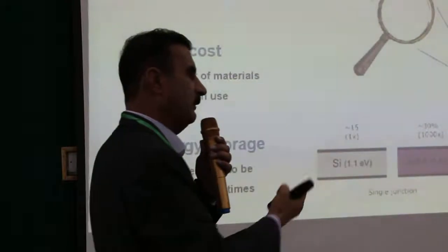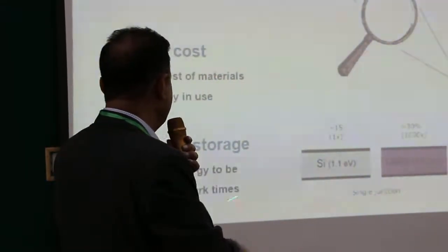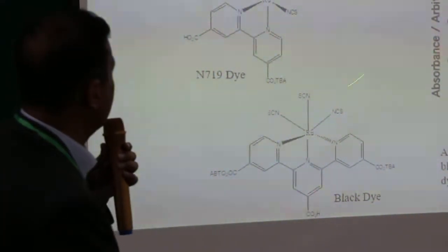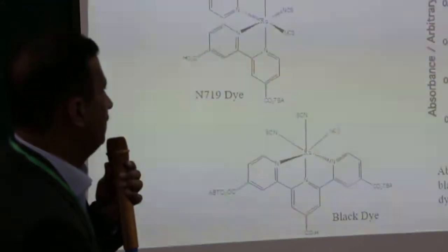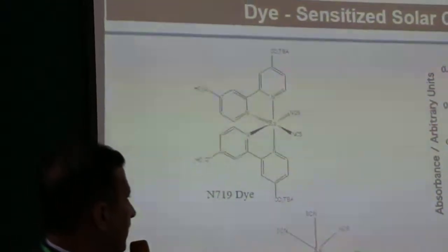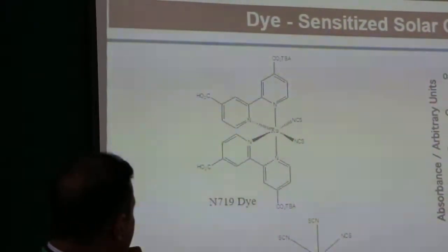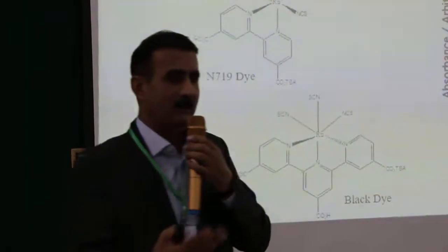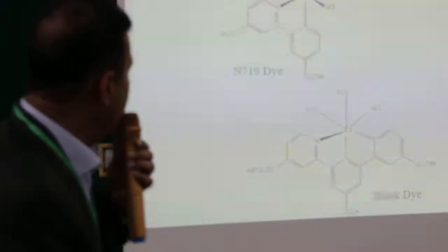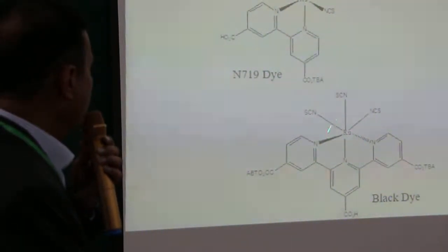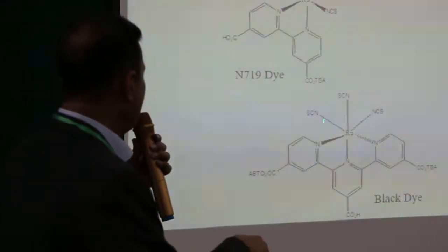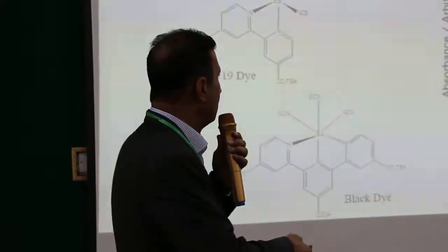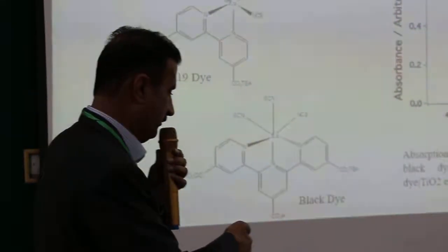At daytime we can harvest light, but at night you need materials that can store energy. For dye-sensitized solar cells, people are developing dyes that can absorb a major portion of sunlight. The best current dye is ruthenium-based, but ruthenium is a rare earth metal — it's very expensive. Additionally, being an organometallic complex, it degrades after some time when kept interacting with sunlight. That is the major problem with dye-sensitized solar cells.